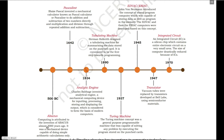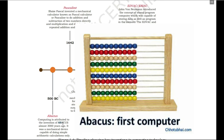This was about 3000 years ago. People invented an Abacus computer — a mechanical device capable of doing some arithmetic calculations, like adding two whole numbers.